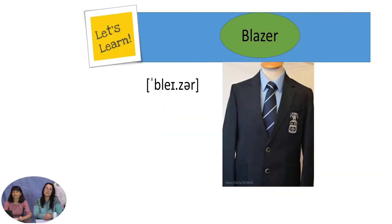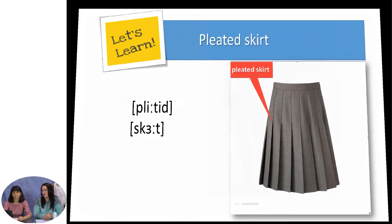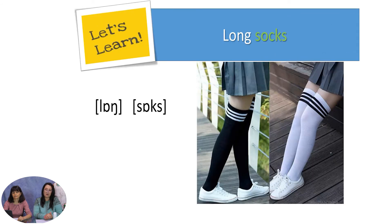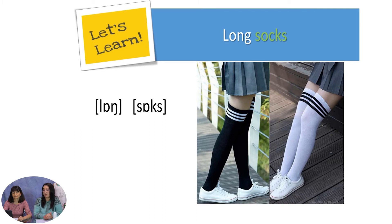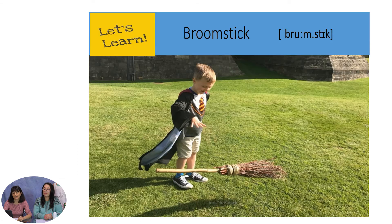Blazer. Pleated skirt. Tights. Long socks. Badge. As you can see, a modern school uniform consists of a dark blazer, a white shirt, a badge, dark trousers, and a tie. What about a broomstick? Are you supposed to bring it to school among other school items? Of course not — it was a joke!